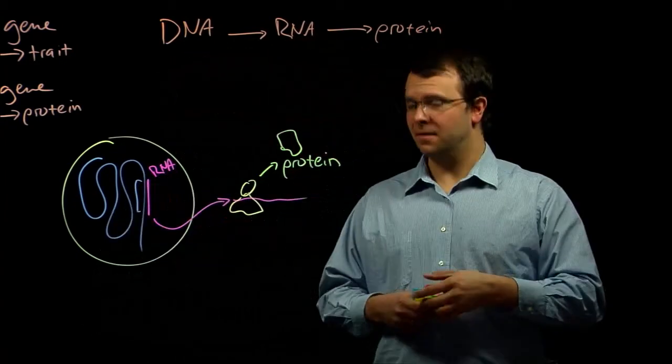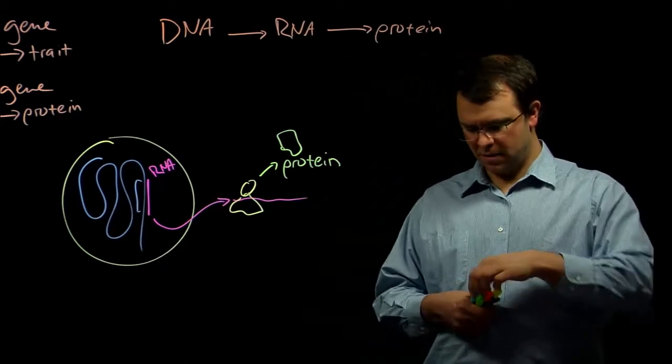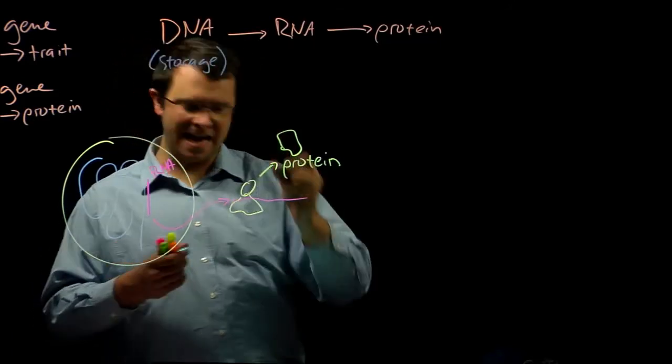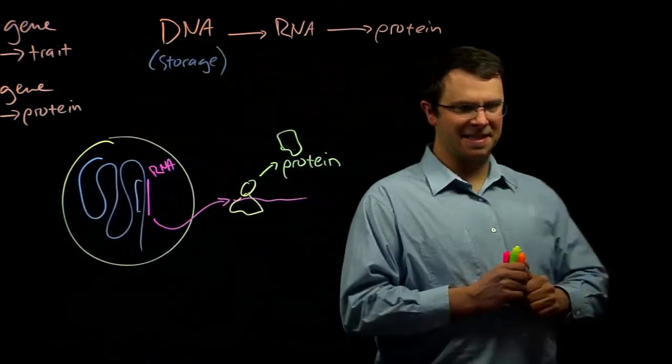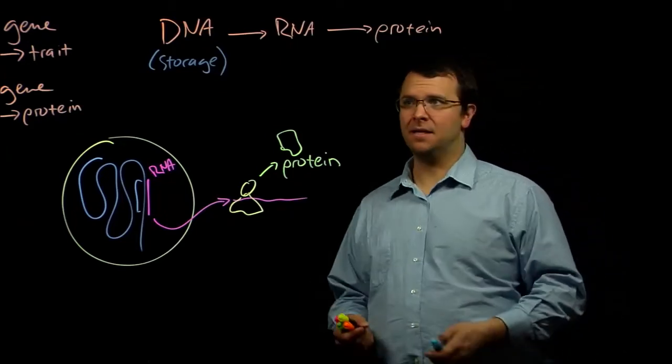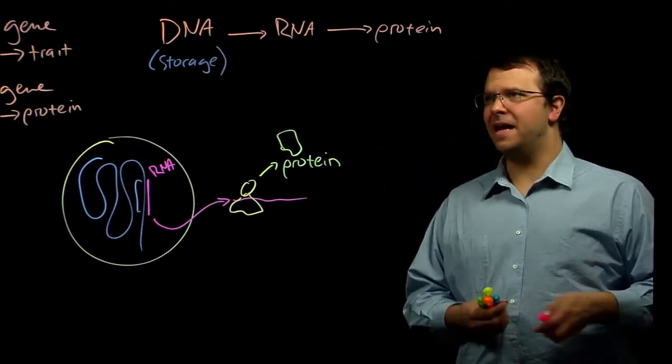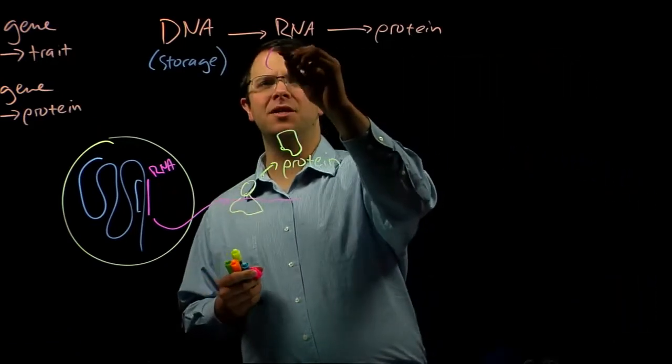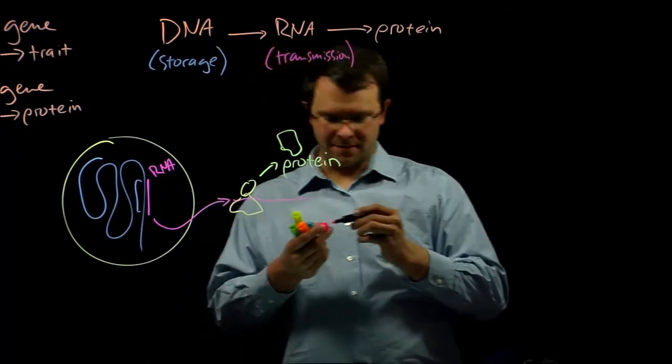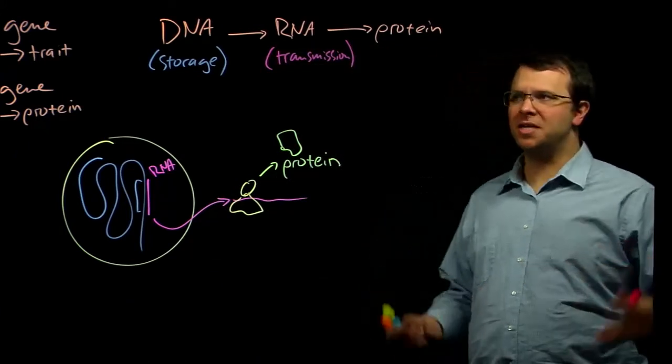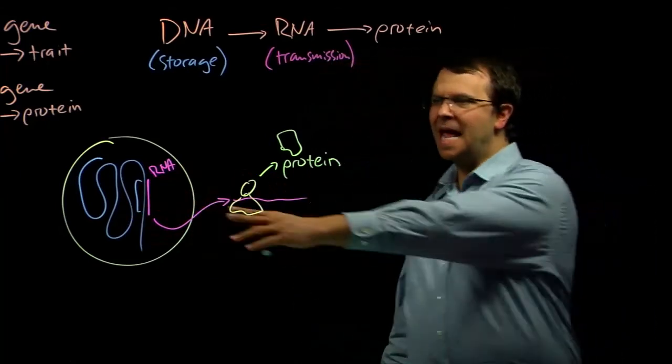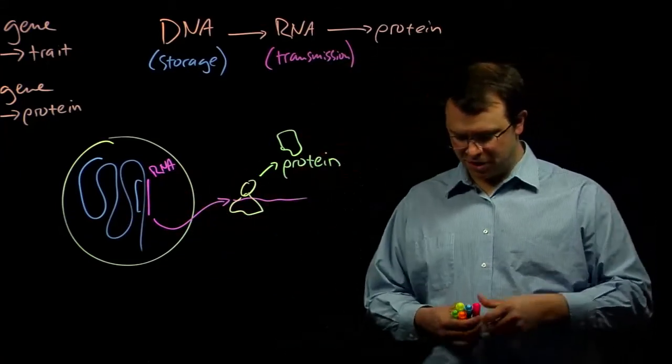And remember that DNA here is our information storage. DNA is stable and because of its secondary structure, it's easy to replicate. RNA is an information transmission mechanism, an information carrier. It carries the information from the DNA which is in the nucleus out into the rest of the cell where that information can be used.